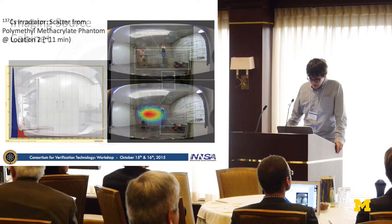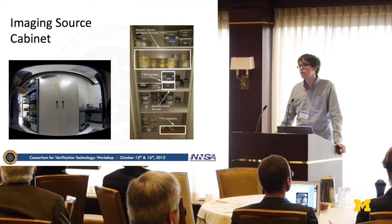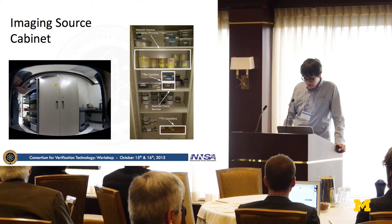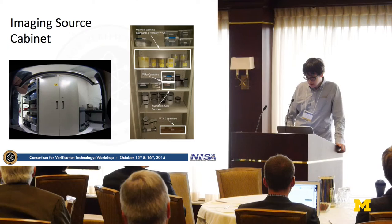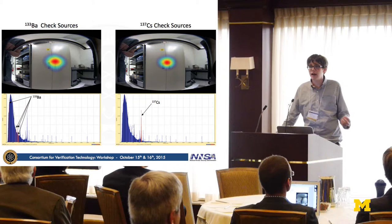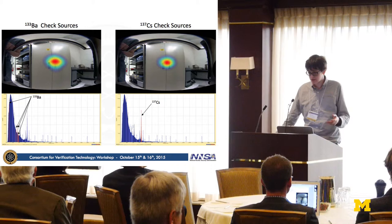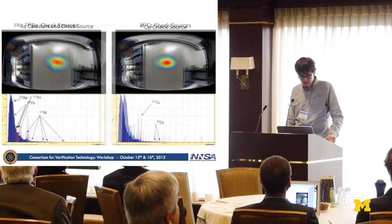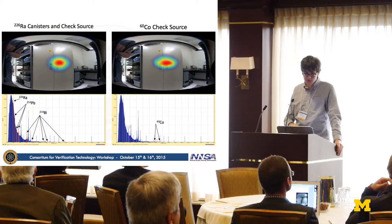Finally, I wanted to image multiple radionuclide sources at once. I pointed the camera at our source cabinet overnight. We have a bunch of check sources for calibration of gamma spectroscopy equipment, all stored in about the same place in a source box — as you can see, they all appeared in about the same place on the image. We also have some radium canisters kept on top of them.